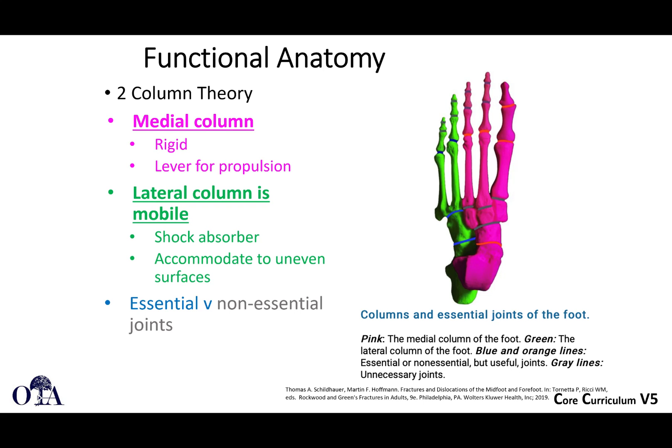There's also a two-column theory, out of Rockwood and Green 2019. You have the medial column, which is rigid and a lever for propulsion, and the lateral column, which is a mobile shock absorber that accommodates uneven surfaces. This is a simplification of the three columns.